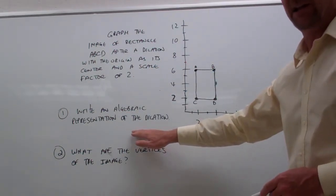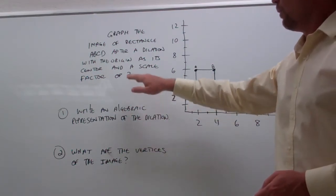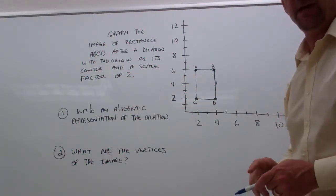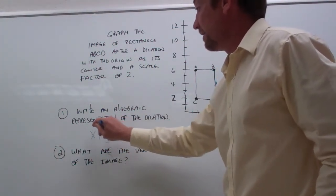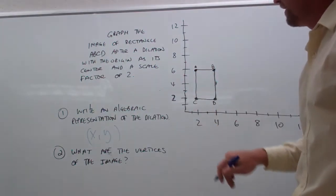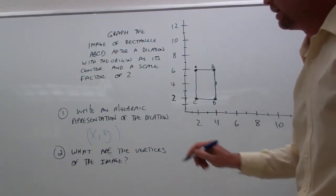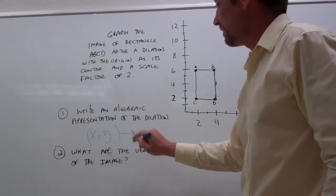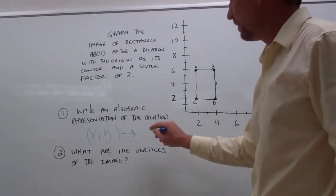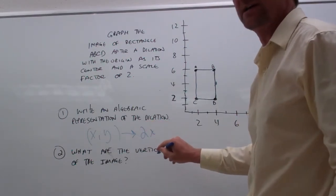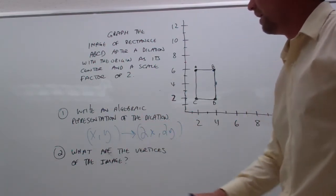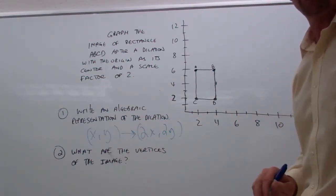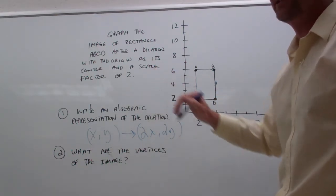Now, algebraically, what would that look like? Well, if we're making everything twice as big, our coordinates x and y that we have right now on ABCD, by making them twice as big, wouldn't it become 2 times x and 2 times y? Well, there's the algebraic representation of this dilation.